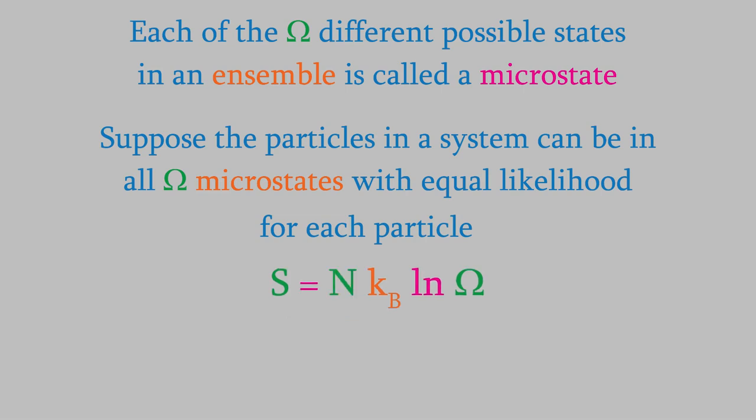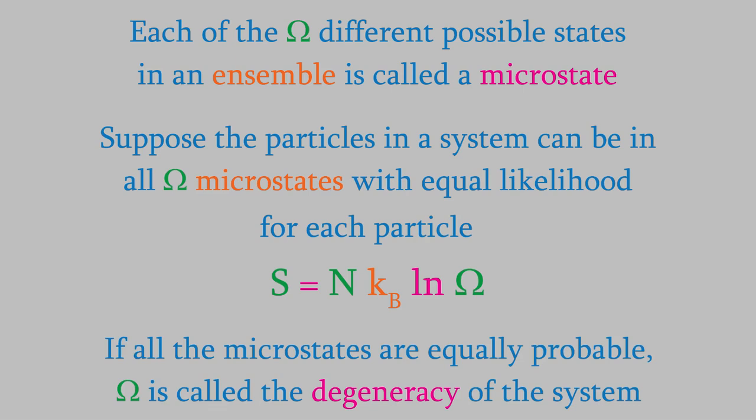we'd have to add together the entropy for each of the n different particles. So we'd have n times kB times the logarithm of omega. In this situation, where each particle has an equal probability of being in each of the omega different microstates, we call omega the degeneracy of the system.